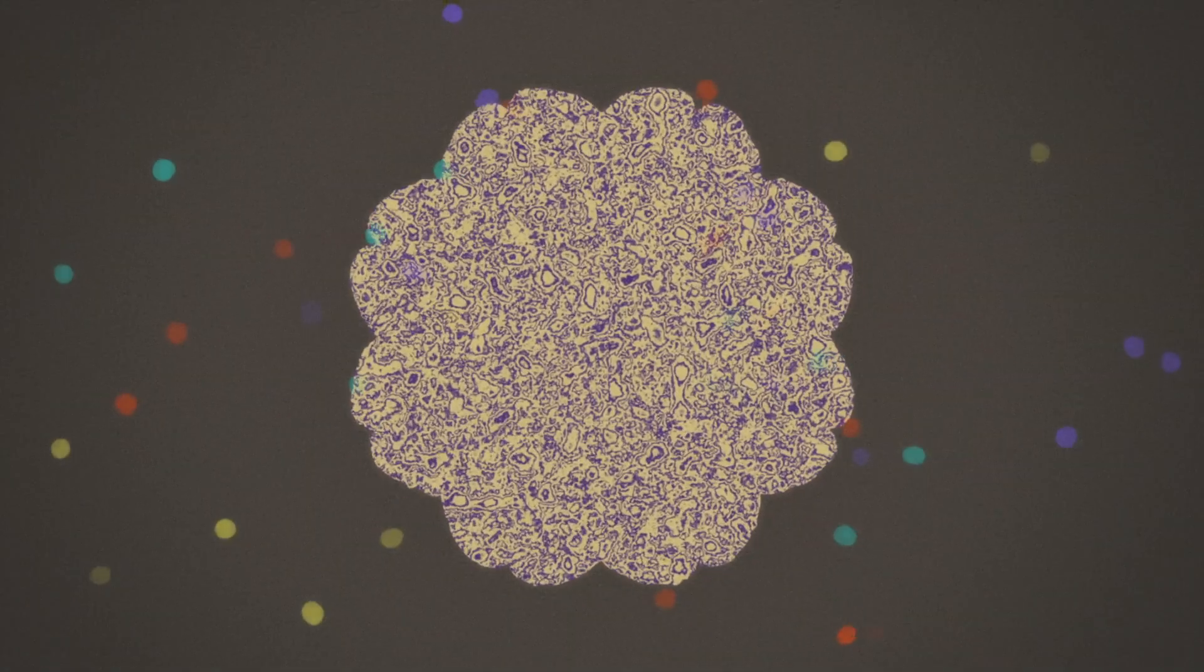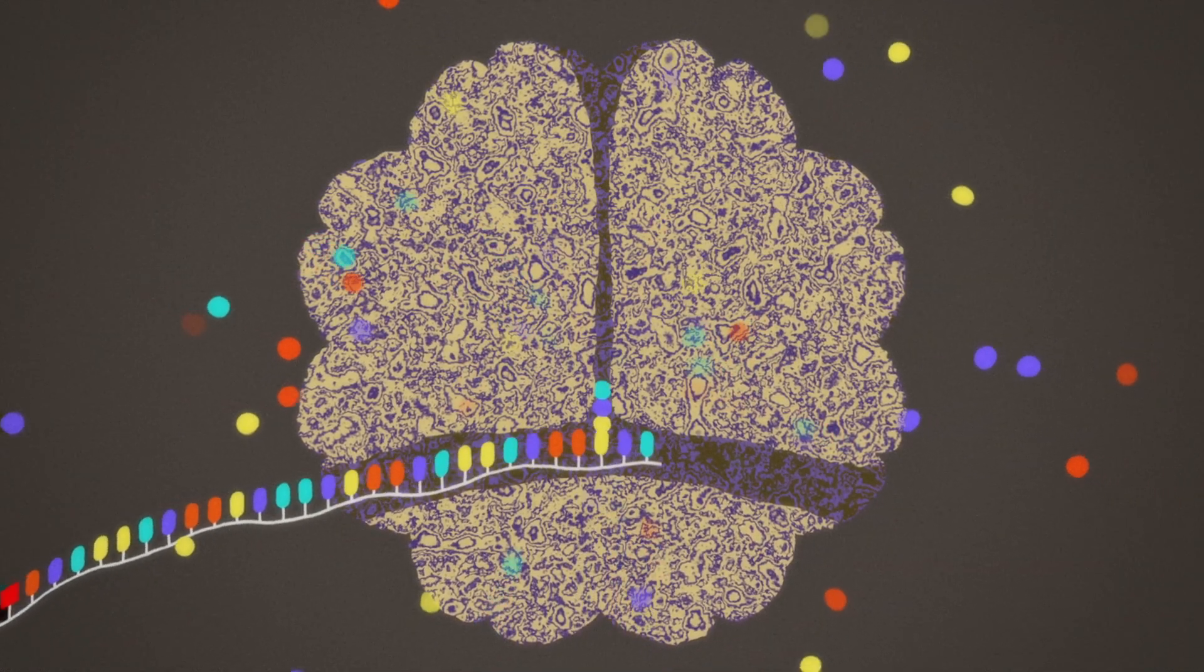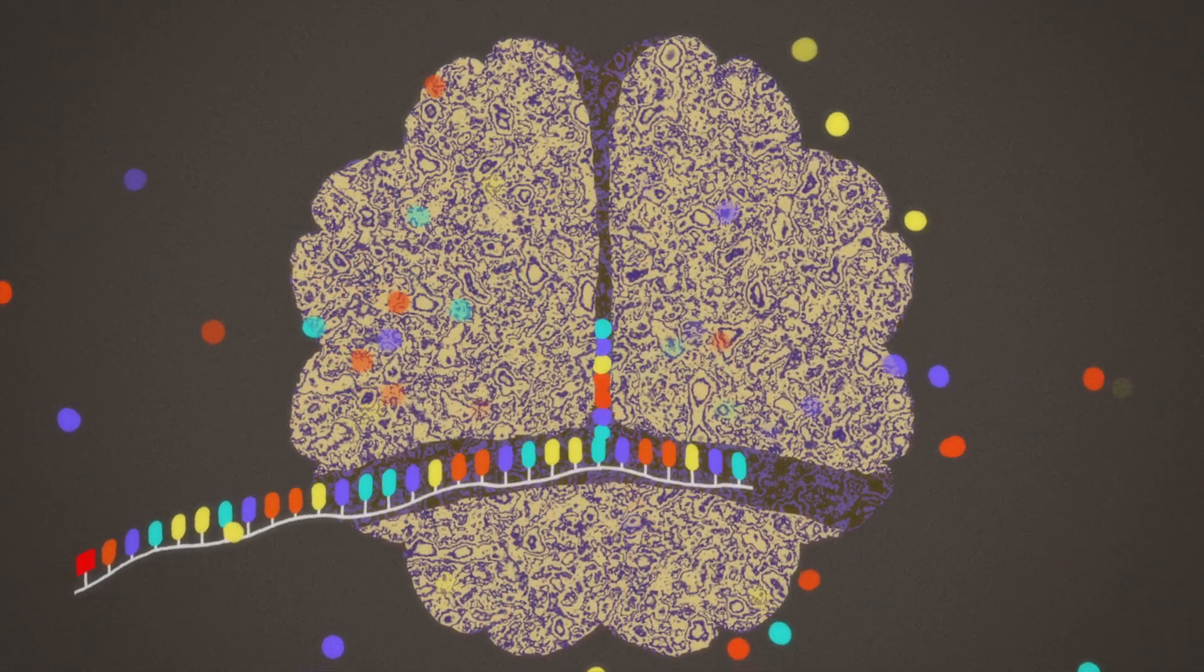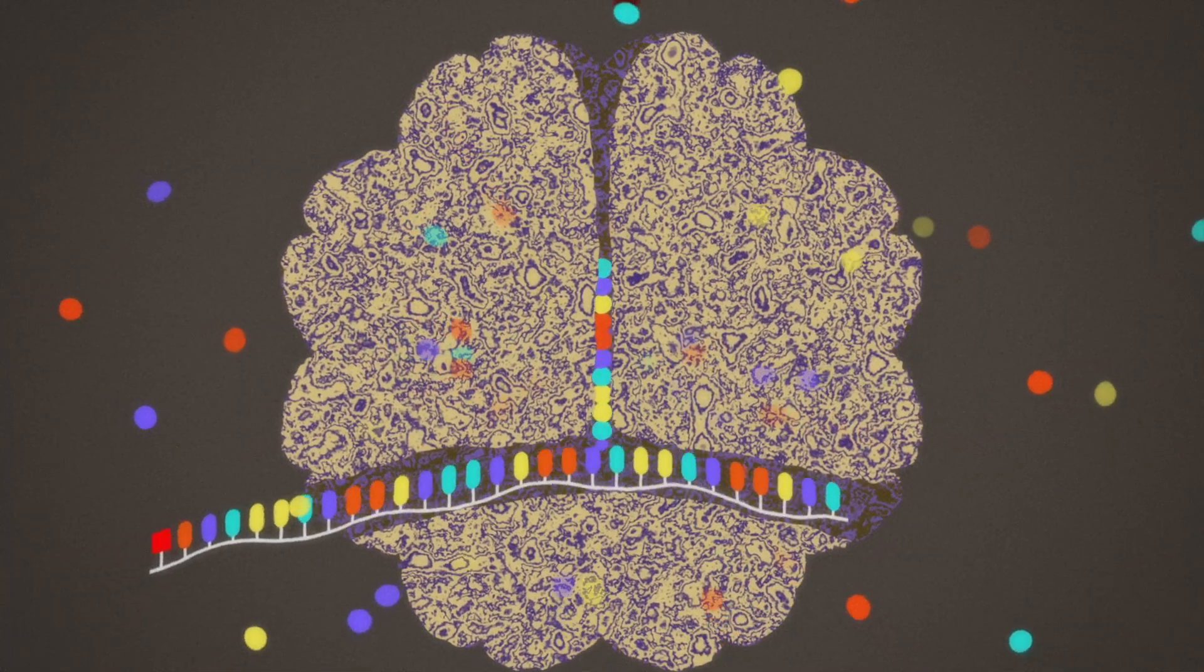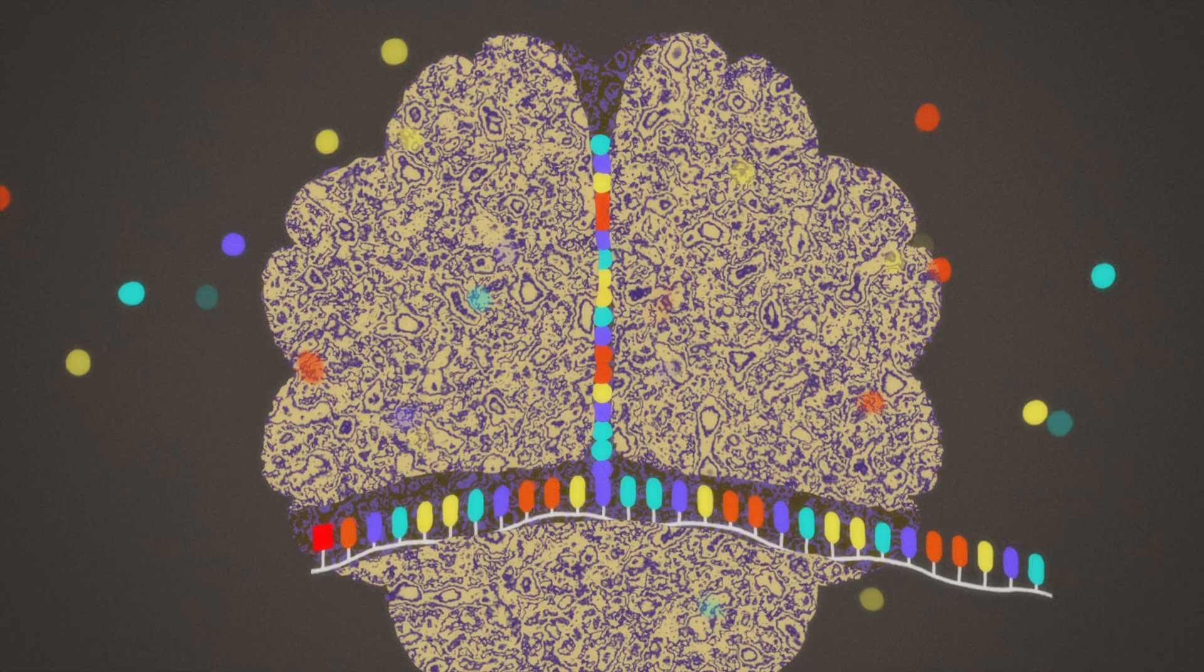Proteins are created inside cells, more precisely within the ribosomes, the cell's small factories. Here proteins are assembled from amino acids, in different combinations depending on which protein is to be produced. A long chain of linked amino acids is formed.